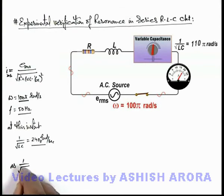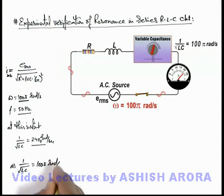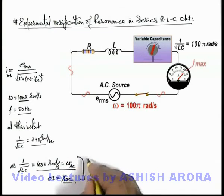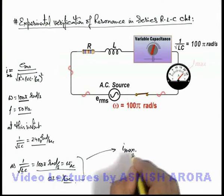And you can see here, as 1 by root LC becomes equal to 100π radians per second, which is equal to the angular frequency of AC source, at this point the value of ωL in the circuit becomes equal to 1 by ωC, and at this stage the value of current becomes maximum.